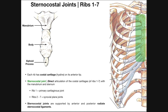Rib number one's connection is a primary cartilaginous joint — an amphiarthrosis, not a synovial joint. Ribs two through seven, however, have synovial plane joints connecting them to the sternal body. These sternocostal joints are also supported by anterior and posterior radiate sternocostal ligaments that are not visible here.